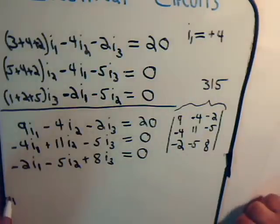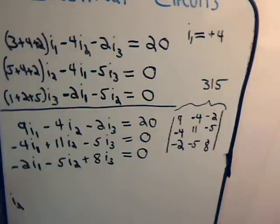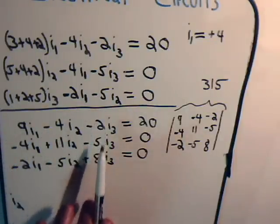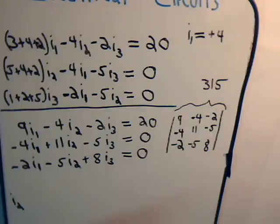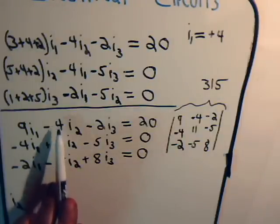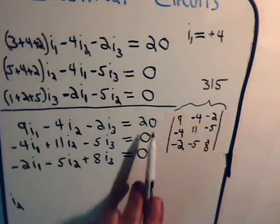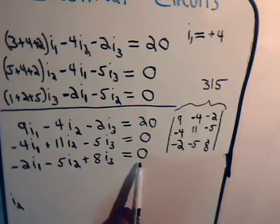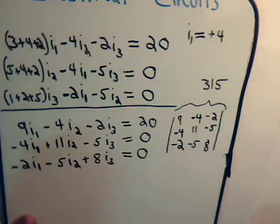And it's the same procedure. Again, we have these three columns of numbers. Now, when we want to determine current I2, we replace this column of numbers with this column of numbers to make ourselves a three by three determinant.